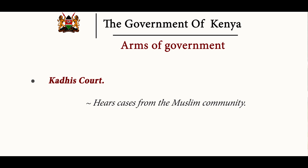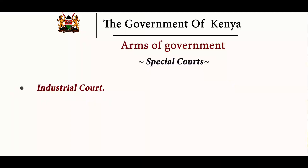If the Muslim community has cases concerning their culture and tradition, they take the matter to Kadhi's court. Other cases — for example, theft — are taken to the normal criminal courts. But if the case concerns something to do with their culture, they are taken to Kadhi's court. The last special court is the industrial court, which hears cases concerning the employer and employee or workers. If a worker has any problem that needs to be resolved, they go to the industrial court.